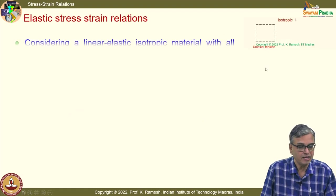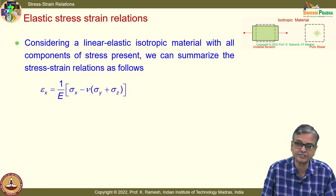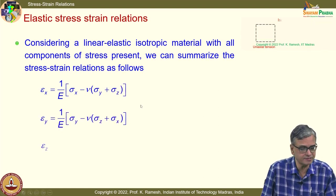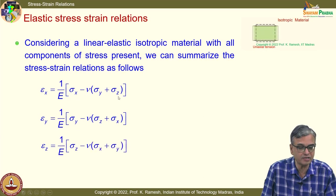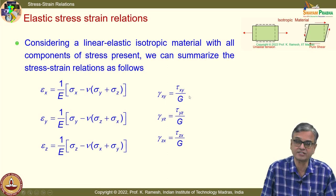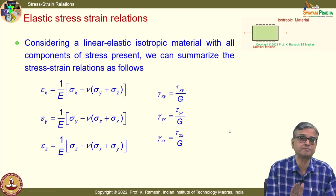We have also looked at stress-strain relations. In a tension test you apply load only in one direction, but when all stress components exist, normal strains are related to normal stresses and shear strain is related only to the respective shear stress. That is the speciality of an isotropic material — it makes our life extremely simple.